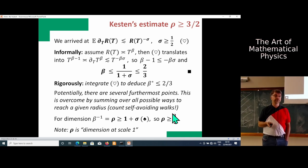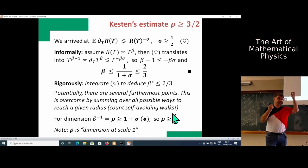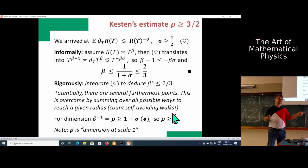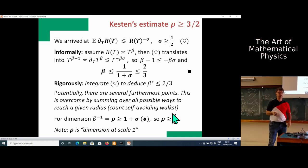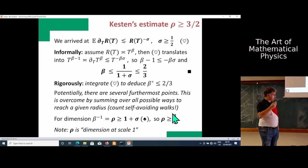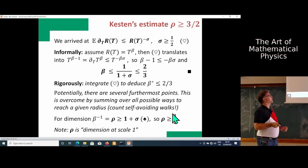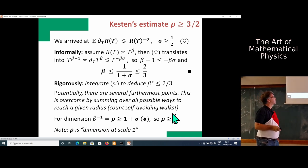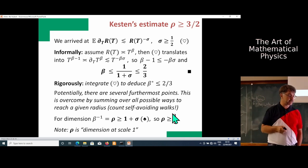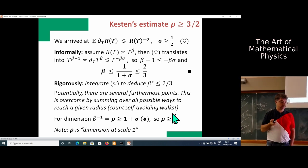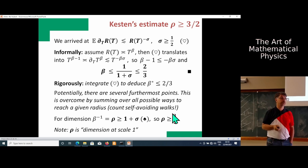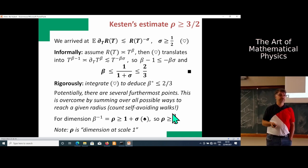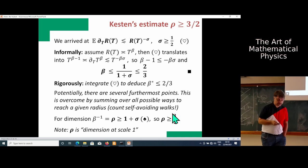Assume radius grows as time to the power of beta. Then time to the power of beta, its derivative is time to the power of beta minus one. That should be no more by this inequality time to the power of minus beta sigma. We get beta minus one is no more than minus beta sigma. We reduce it and get that beta is no more than two thirds, and the reciprocal rho is at least three halves. This is a very nice calculation. It took some time to convert it into mathematical statement.